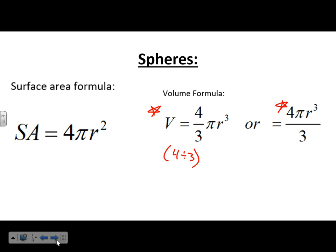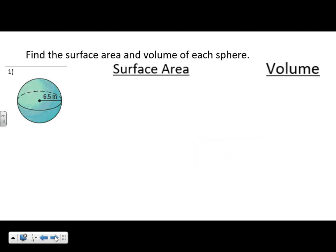A lot of times in textbooks the formula will look one way, but your formula sheet will have both versions. Find the surface area and the volume for this sphere. The surface area is 4πr² and the volume is 4πr³ divided by 3. Make sure we have those right.